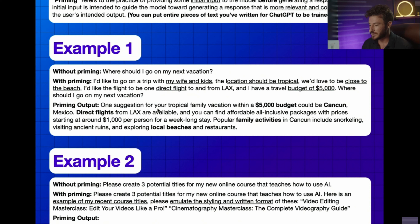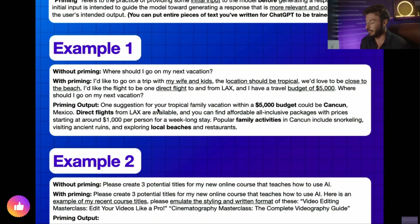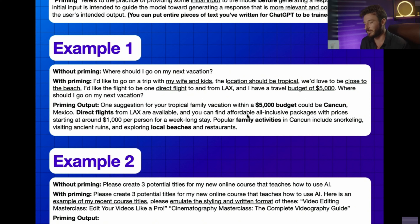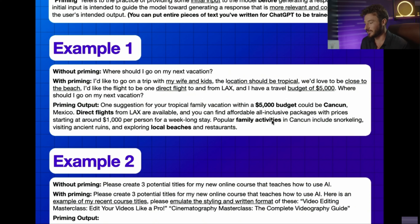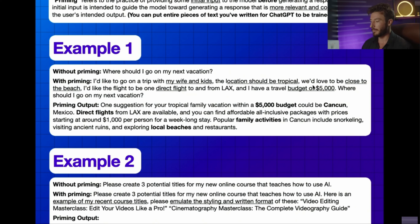The priming output is: one suggestion for your tropical family vacation within a $5,000 budget can be Cancun, Mexico. Direct flights from LAX are available, and you can find affordable all-inclusive packages with pricing starting around $1,000 per person for a week-long stay. Popular family activities in Cancun include snorkeling, visiting ancient ruins, and exploring local beaches and restaurants. So it addressed who I was with, where I wanted to go, my budget, and having a direct flight from where I live.